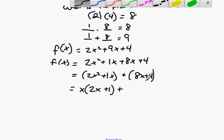What is my greatest common factor in the second group? Well, it's 4. I can take and group and factor out a 4, leaving me with 2x plus 1.